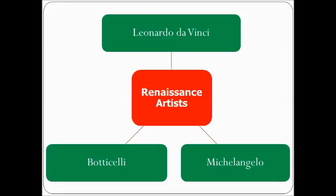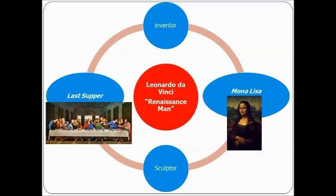Renaissance artists include Leonardo da Vinci, Michelangelo, and Botticelli. The most famous is Leonardo da Vinci — he is an inventor, he paints the Mona Lisa, he's a sculptor, and he paints the Last Supper. Because he has all these qualities, they call him the Renaissance man. He's an artist, he writes literature, he's an inventor, he studies lots of different things. He's a well-rounded man — the perfection of what it meant to live in the Renaissance.